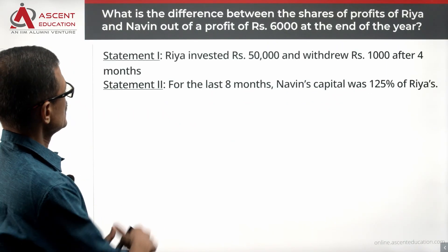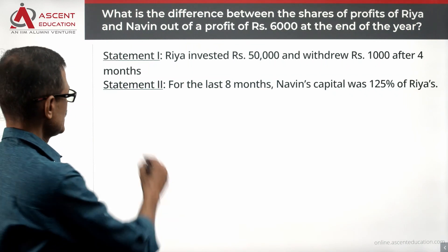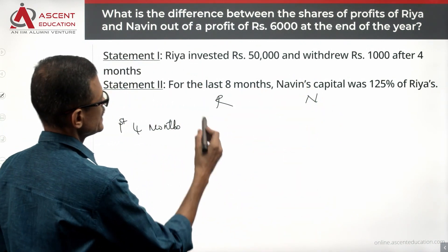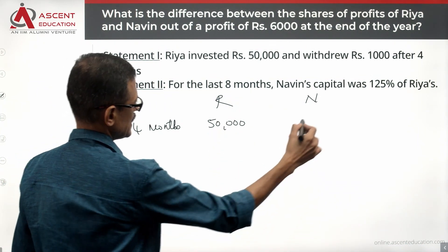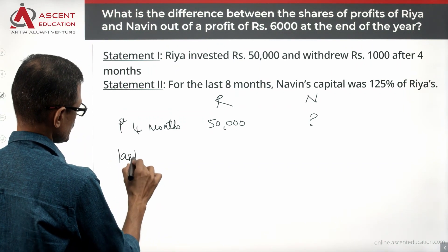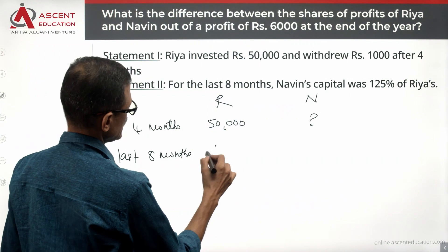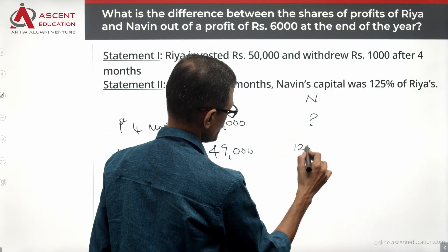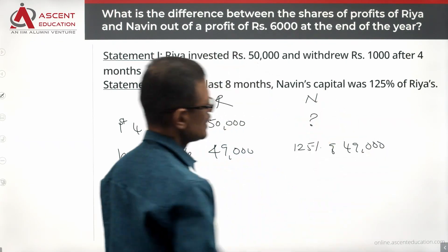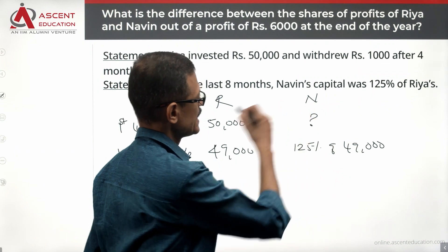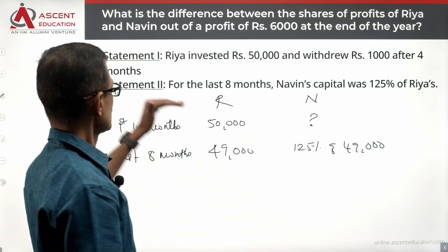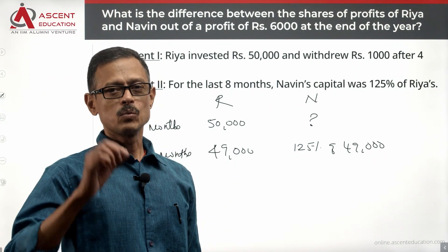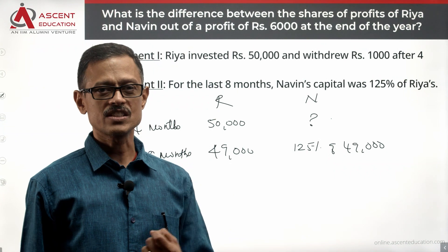Combining both statements: Rhea invested 50,000 and withdrew 1,000 after 4 months. For the first 4 months, Rhea invested 50,000, but Navi's investment is unknown. For the last 8 months, Rhea had 49,000, and Navi had 125% of 49,000. We still do not have one piece of data: how much did Navi invest in the first 4 months. So we know Rhea's capital for all 12 months and Navi's capital for the last 8 months, but not Navi's first 4 months.